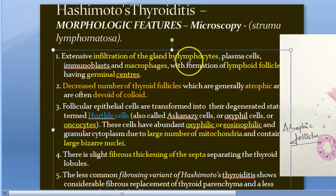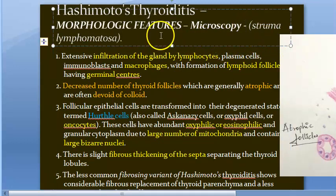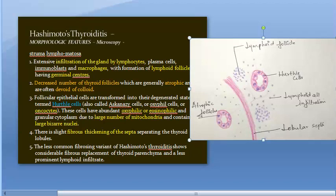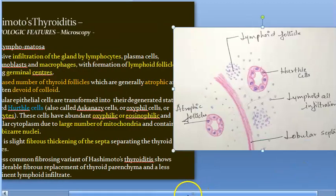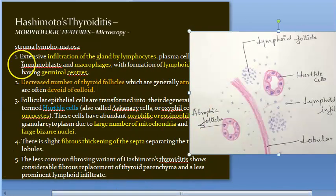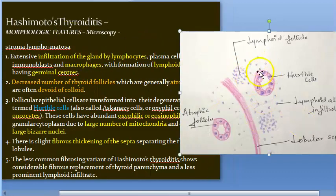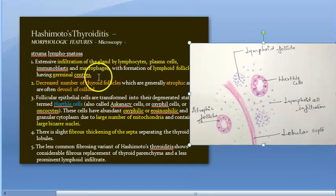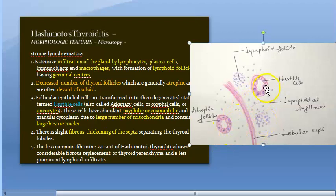Moving on to microscopy of Hashimoto's thyroiditis — remember the term struma lymphomatosa, as writing that word may earn you marks. There is lymphocytic infiltration of the gland, with the gland full of lymphocytes, macrophages, and plasma cells. There are lymphoid follicles with germinal centers. The number of thyroid follicles is decreased — they are atrophic and have no colloid inside.